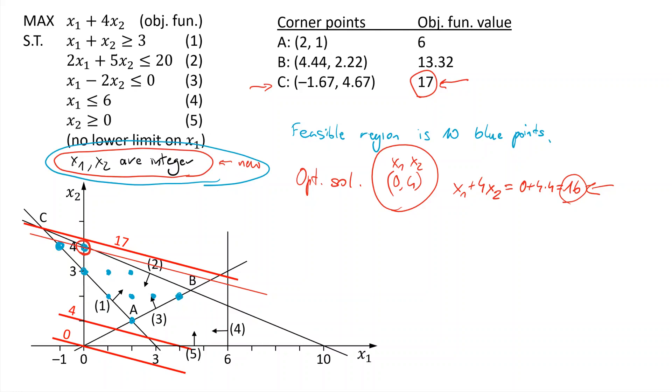And also what I would like you to see as interesting is that if you try to round this solution to an integer value, if you have (-1.67, 4.67), you could round it to -2 or to -1, the nearest integers, to this. But actually, optimal solution has 0 here. So this solution (0, 4), which is optimal, you wouldn't be able to reach this solution by rounding the fractional optimal solution, point C.